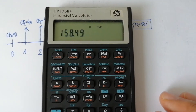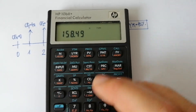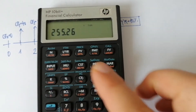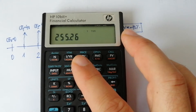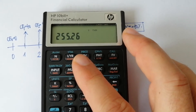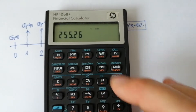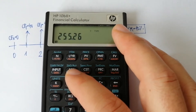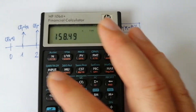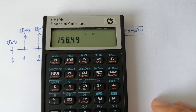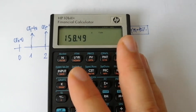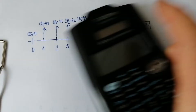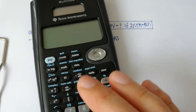If you swap the variables you can also see the net future value — this calculator is able to calculate that value as well. Okay, let's see the same problem on the Texas calculator.